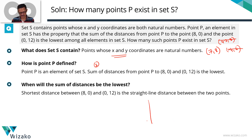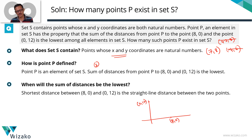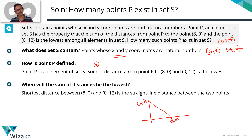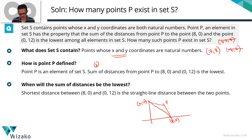Let's plot (8, 0) and (0, 12) in an xy-plane. (8, 0) has x-coordinate 8 and y-coordinate 0; (0, 12) is on the y-axis. Let's say point P is somewhere not on the line joining these two points. The sum of the distances from P to (0, 12) and (8, 0) would be two segments — let's call them A and B. So the total distance is A plus B.